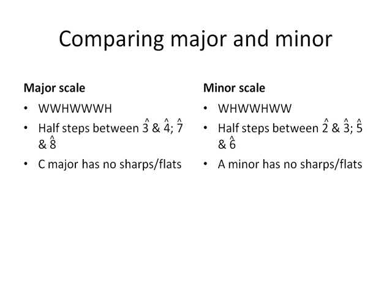Here is a side-by-side comparison of the major and minor scales. Both feature only two half steps. They occur between three and four and seven and eight in the major scale, and between scale degrees two and three and five and six in the minor scale. Remember to always put carets above the number when you're talking about scale degrees to avoid confusion.